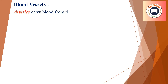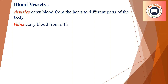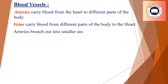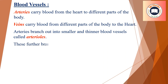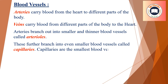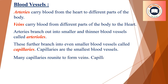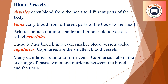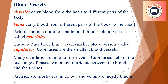Arteries carry blood from the heart to different parts of the body. Veins carry blood from the different parts of the body to the heart. Arteries branch out into smaller blood vessels called arterioles, which further branch into even smaller blood vessels called capillaries — the smallest blood vessels. Many capillaries reunite to form veins. Capillaries help in the exchange of gases, water, and nutrients between the blood and the tissues. Arteries are mostly red in color and veins are mostly blue in color.